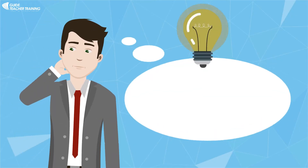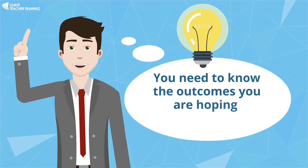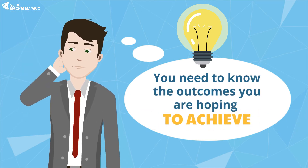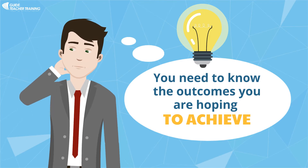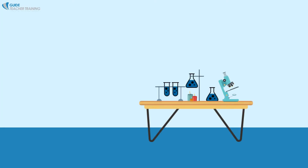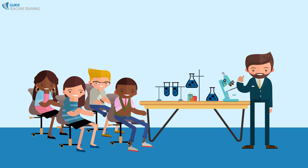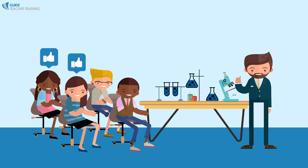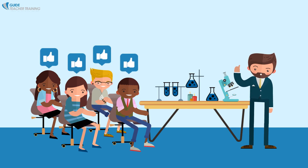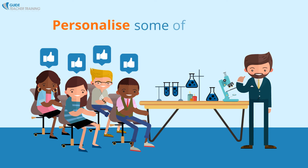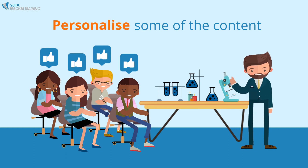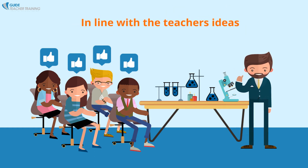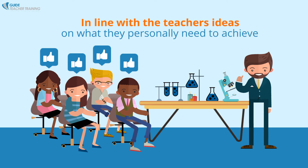In order to help, you need to know the outcomes you are hoping to achieve, because if you don't have the outcome in mind, it's very hard to get the students to achieve the right things. So, alongside what the teacher has prepared for the class in terms of aims, objectives, outcomes, etc., you will usually be required to personalise some of the content and either encourage the students towards the same aims as the majority of the class, or maybe change the aims slightly.